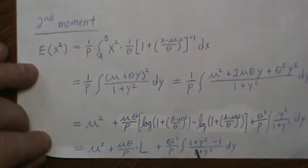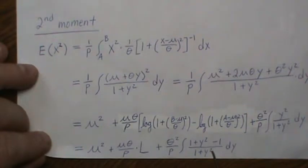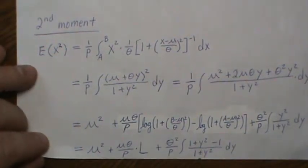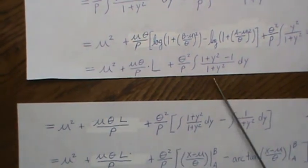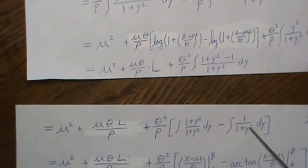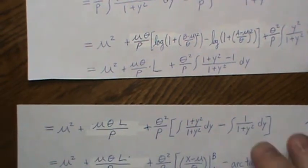So we just carry things down, and that's L. So here we get the theta squared over P, and then times this. Well, this is 1, and then this one becomes arctangent, like on the first page.